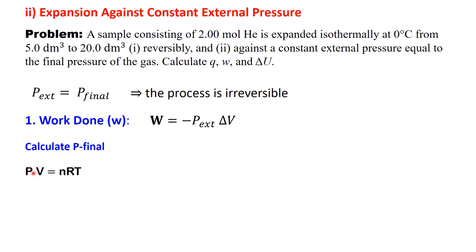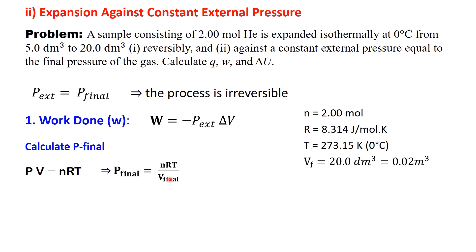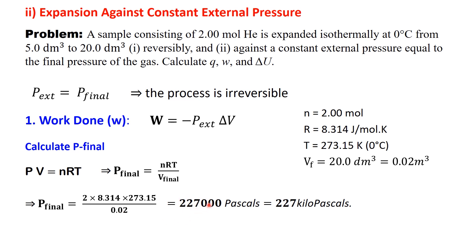We'll use the ideal gas law at the final state: P final equals nRT divided by V final. The values are: n equals 2 moles, R equals 8.314 joules per mole per Kelvin, T equals 273.15 Kelvin, and V final equals 20 decimeters cubed, or 0.02 cubic meters. Plugging in: 2 times 8.314 times 273.15, divided by 0.02, gives P final equals 227,000 pascals, or 227 kilopascals.